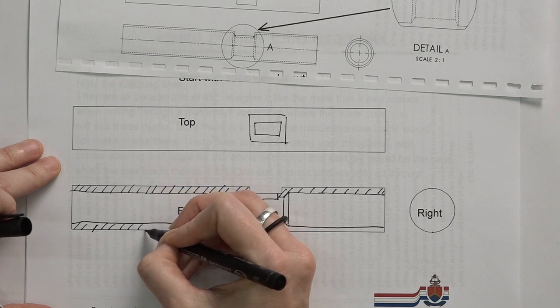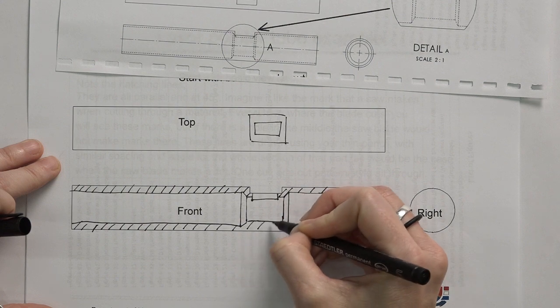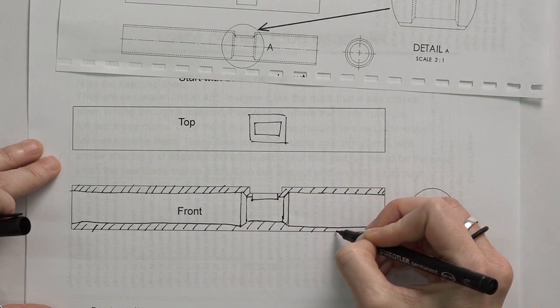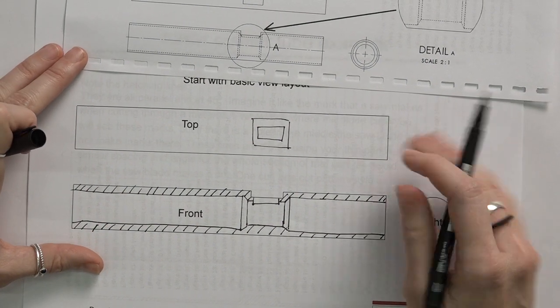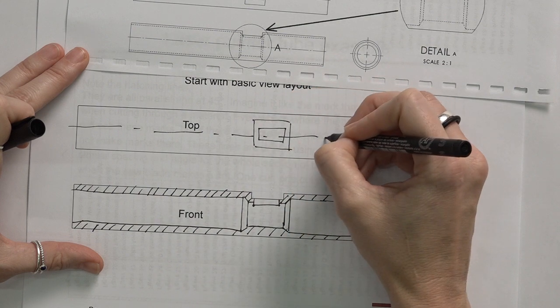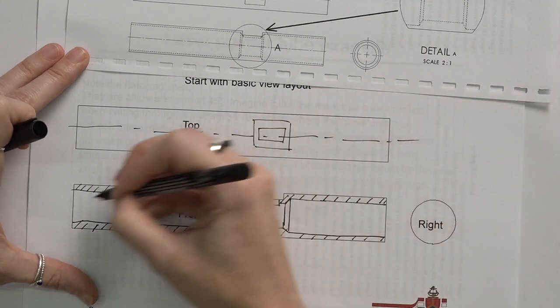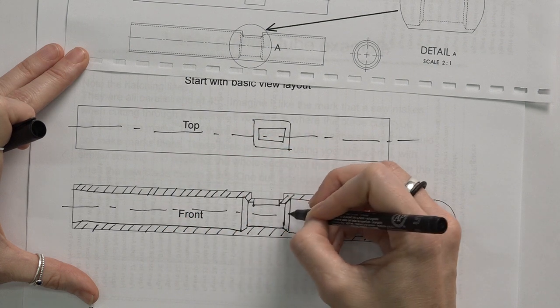You can continue to section, just hatching this all the way through. And that will be your completed section view of this particular laser tube. Just adding in the center lines to make sure you have all the information.